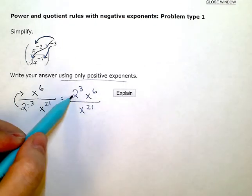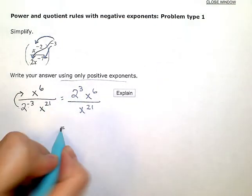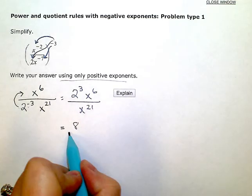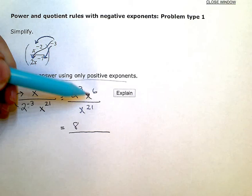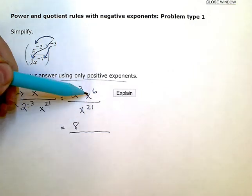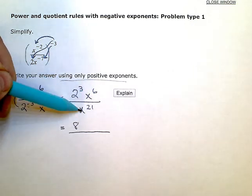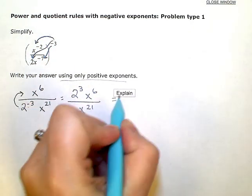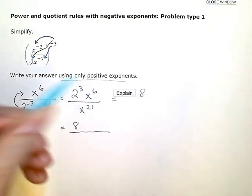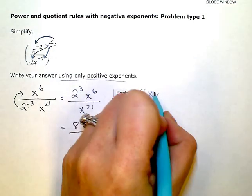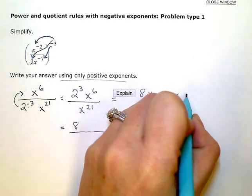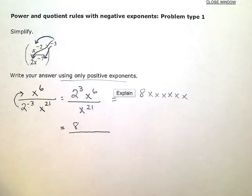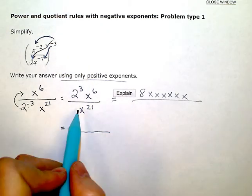2 cubed is just 2 times 2 times 2, or 8. And here I have exponents with the same base. So x to the 6th means I have 8 and then x times x times x times x times x times x — I have 6 factors of x in the numerator, and I have 21 factors of x in the denominator.